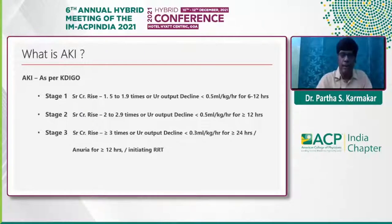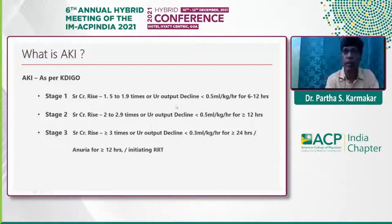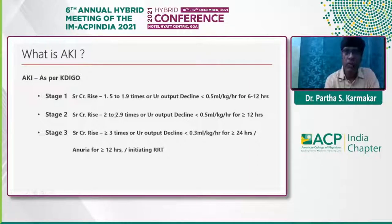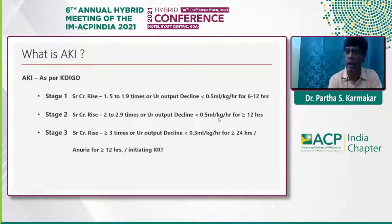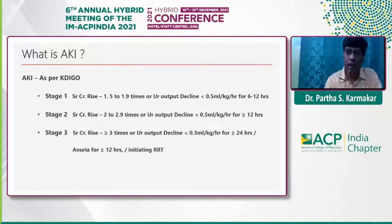Based on these criteria, AKI is divided into three stages. Stage 1: serum creatinine 1.5 to 1.9 times the basal level, or urine output less than 0.5 mL/kg/hour for 6–12 hours. Stage 2: creatinine 2 to 2.9 times the basal level, or urine output less than 0.5 mL/kg/hour for more than 12 hours. Stage 3: serum creatinine more than or equal to three times, urine output less than 0.3 mL/kg/hour for more than 24 hours, or anuria for more than 12 hours, or patient requiring renal replacement therapy.